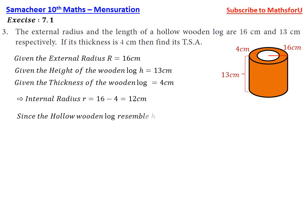Since the hollow wooden log resembles a hollow cylinder, we can use the formula of the hollow cylinder. TSA, total surface area of the wooden log, that is nothing but total surface area of the hollow cylinder. We can use the formula 2π(R + r)(R - r + h).